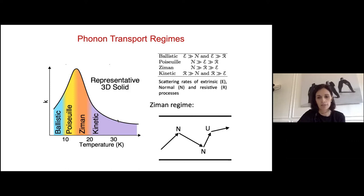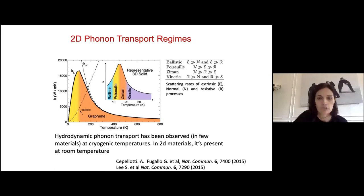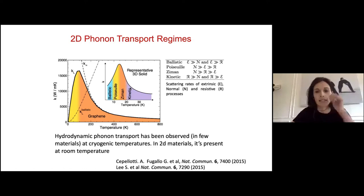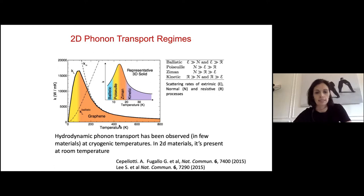In a standard 3D solid, starting from the ballistic regime where boundary scattering dominates, as the system size grows there is the Poiseuille regime where normal scattering is most abundant relative to extrinsic and resistive scattering — the heat flux propagates like Poiseuille flow, where further from the boundary the heat wave is less modified. Then in the Ziman regime resistive processes dominate and thermal conductivity decreases with temperature. For the 2D transport regime, evaluated for graphene, the Poiseuille flow lasts up to 100 K. The Poiseuille and Ziman regimes together form the hydrodynamic regime, where heat propagation behaves like a wave.